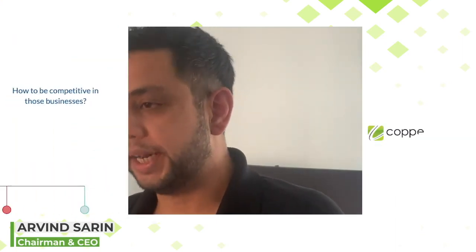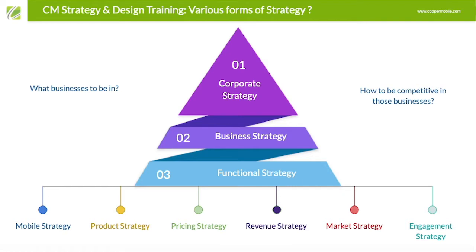Let's think about what strategy is. There is something called corporate strategy. Corporate strategy is about what businesses to be in. At Copper Mobile, we made the decision that we want to do mobile applications and emerging technologies. We decided we don't want to make consumer apps for silly things, but to differentiate ourselves in making enterprise apps that have some sort of ROI — return on investment.